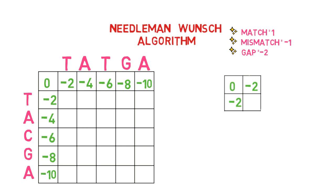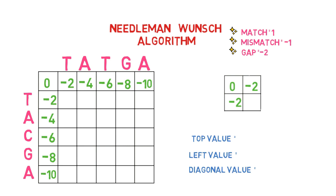This requires us to consider 3 values: top, left, and diagonal. The top and left values represent the gap penalty, while the diagonal value represents match and mismatch. It means that when we take values from the top and left sides, we add a gap penalty to them, but if we take values from the diagonal side, we add a match or mismatch value to them.